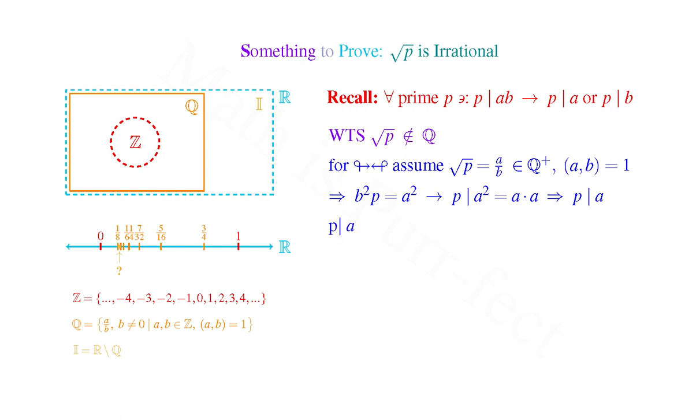If P is a factor of A, then there exists some positive integer N, such that A can be written as P times N. That is, B²P = P²N². Reducing the P's gives us B² = PN², which means that P divides B by the same argument as above.